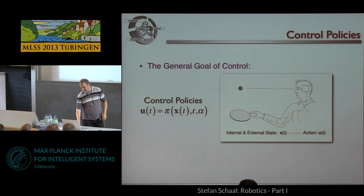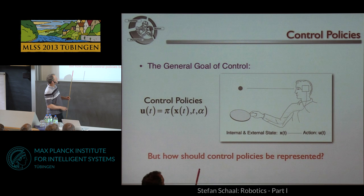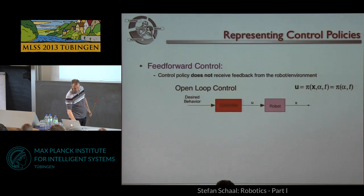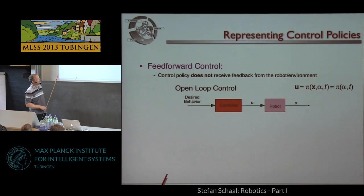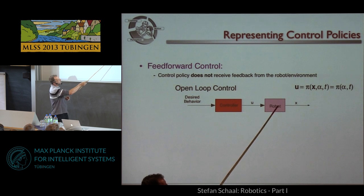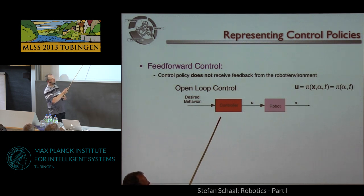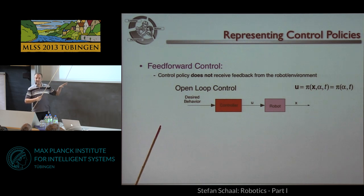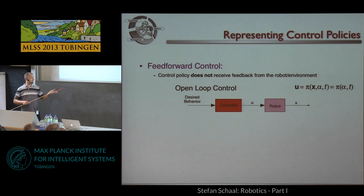After that overly general formulation, the question is how to put representations in there to make it more manageable. Here's the first part — some important terminology in robotics. First is what is called feed-forward control: you have a desired behavior, a control box puts out a motor command, gets it to a robot, the robot does something, but you don't get feedback to the controller — so it's called open-loop control. The dancing robot woman was mostly open-loop control: it doesn't perceive its environment, doesn't perceive the beat of the music, it just goes and does its thing.